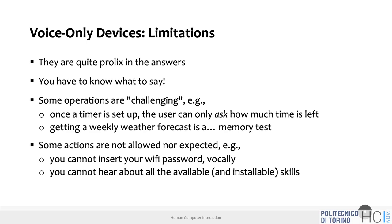Voice-only devices have limitations too. They tend to be quite verbose in their answers — the Giallo Zafferano example listed ten different recipes. This verbosity is sometimes appropriate, but must be balanced. Amazon's own guideline recommends limiting options to three — yet the Giallo Zafferano skill listed ten, which doesn't meet even Amazon's own guidelines.